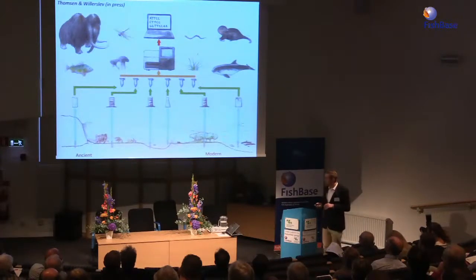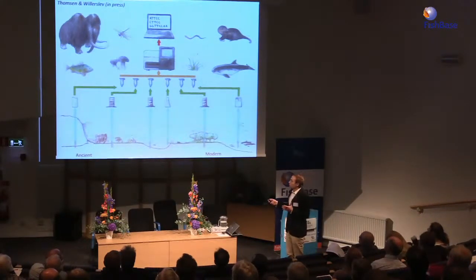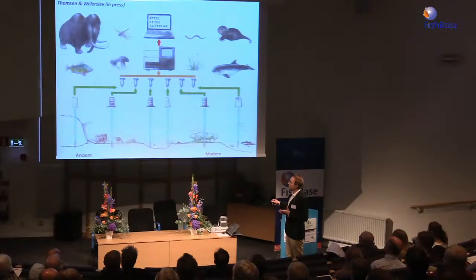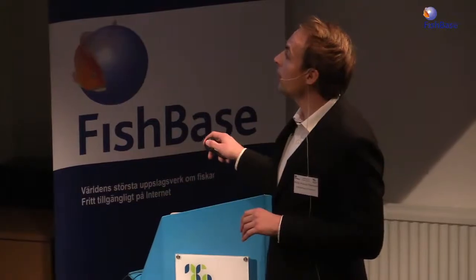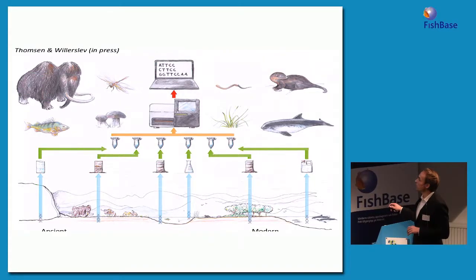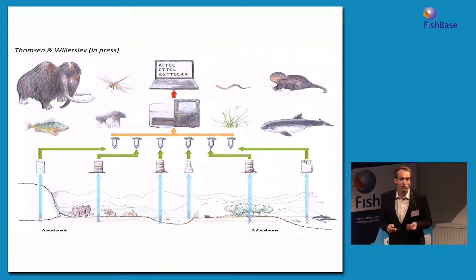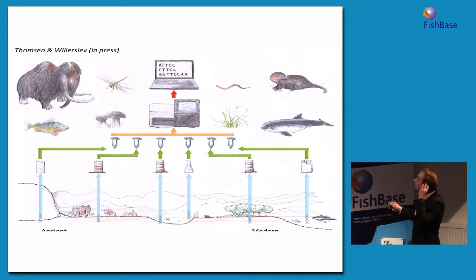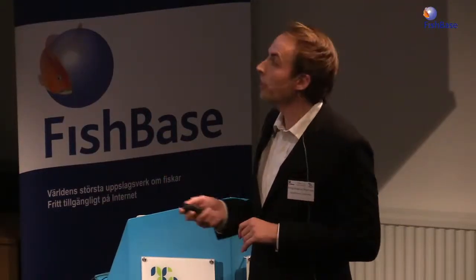It comes from many sources. There's a review coming out soon. You can find it in ancient glaciers, ancient permafrost sediments, ancient lake sediments, and in modern environments such as freshwater, seawater, and topsoil in terrestrial ecosystems. They all contain a rich variety of DNA — from fungi, plants, and many different animals.